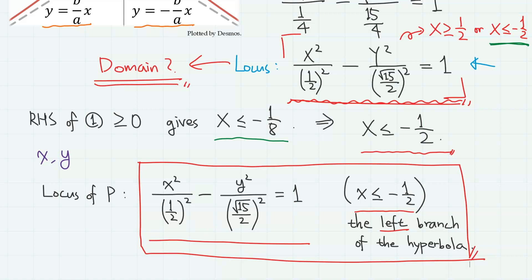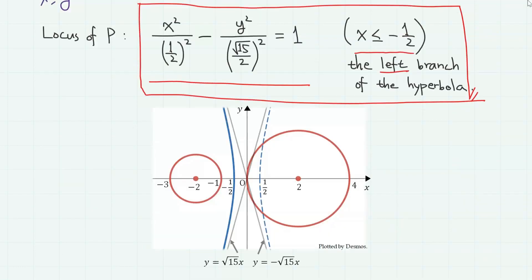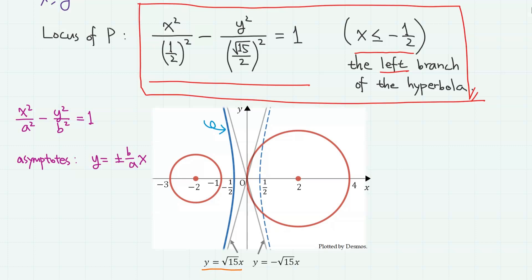Drawing the locus, it looks like this — the curve on the left. You can easily check that the asymptotes are y equals square root of 15 times x and y equals minus square root of 15 times x.